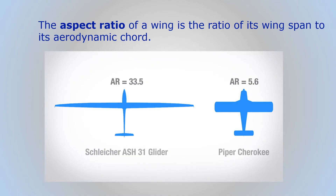The aspect ratio is the ratio between the wingspan — the distance from one wing tip to the other — and the wing chord. Generally, the higher the aspect ratio, the greater the lifting efficiency.